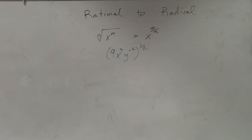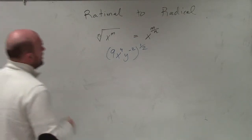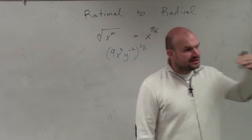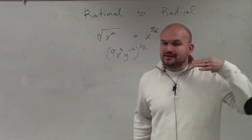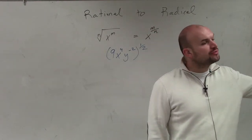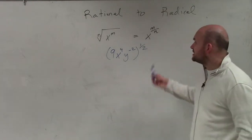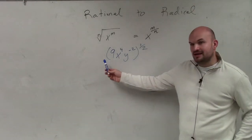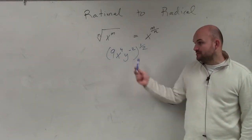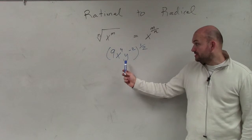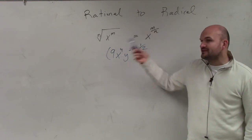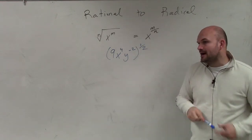So what we're basically going to do is, if you guys remember, we've already talked about the power-to-power rule. This is going to be what we call the power-to-product rule, which basically tells us that if we have an expression with multiple terms and it's raised to a power, then we're going to raise everything to that power.